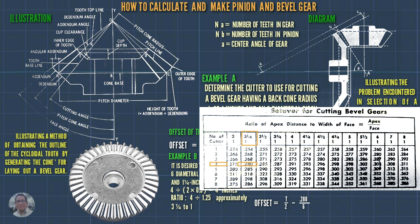The offset equals T divided by 2, minus 0.248 (the factor from the table), divided by the diametral pitch of 6.